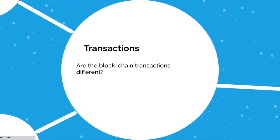Any operation which is to be recorded in the database is a transaction. For example, Mr. X giving 100 rupees to Mr. Y is a transaction; purchasing something from someone is a transaction; a land registrar writing in a system that a particular land now belongs to a certain person is a transaction. These transactions are grouped together and recorded in a block.